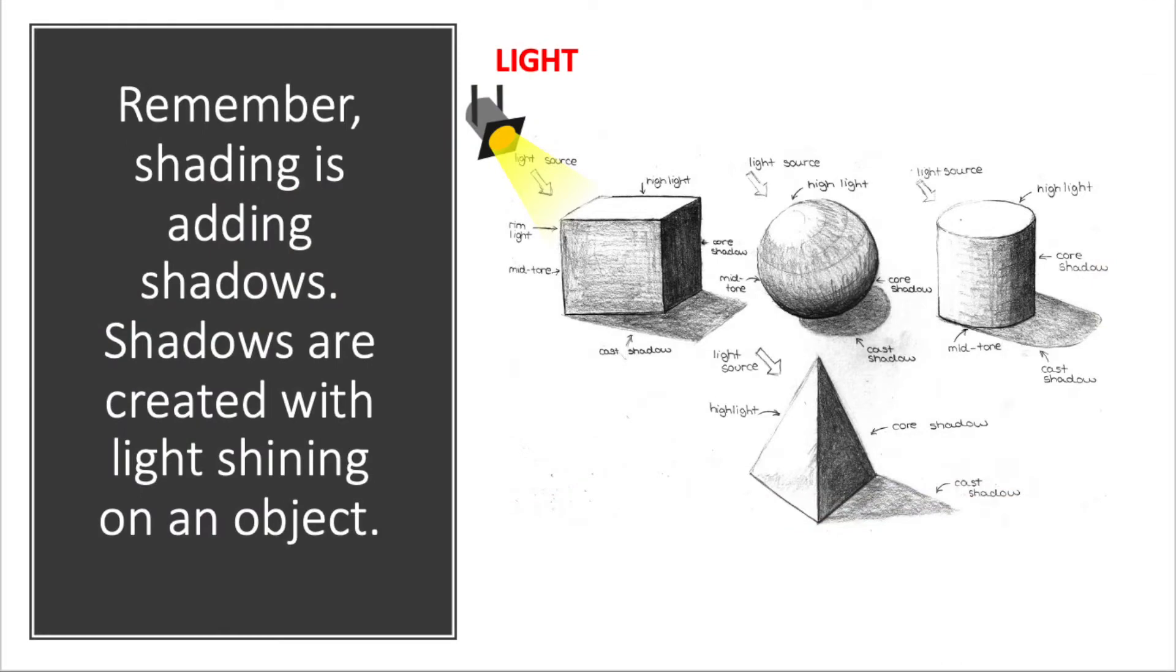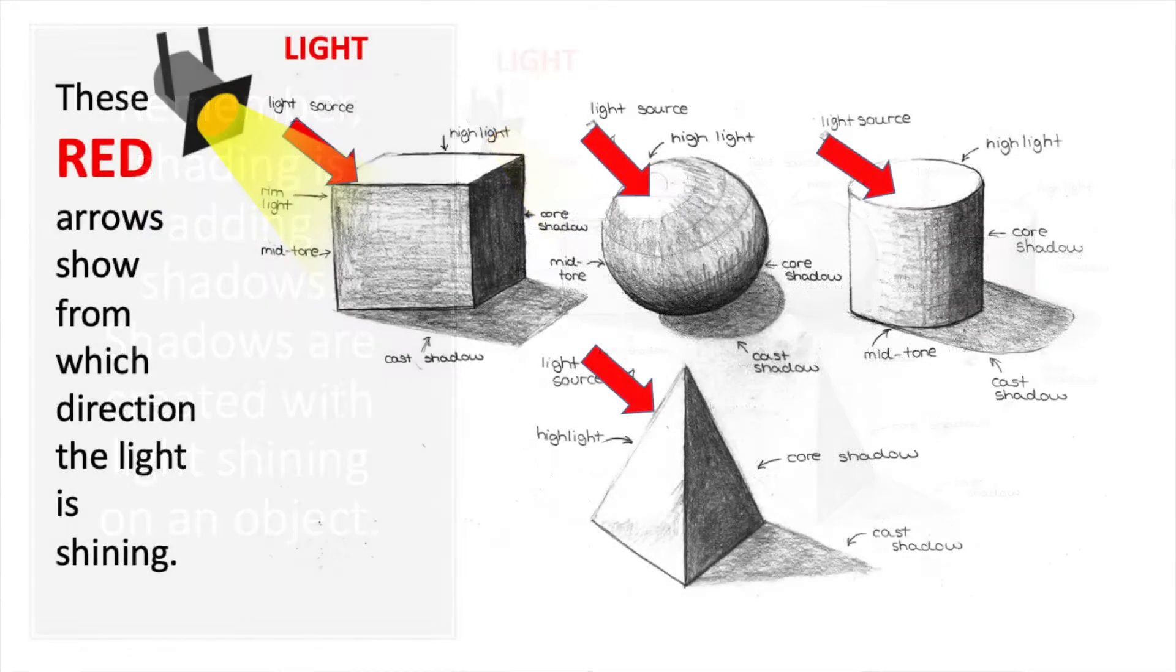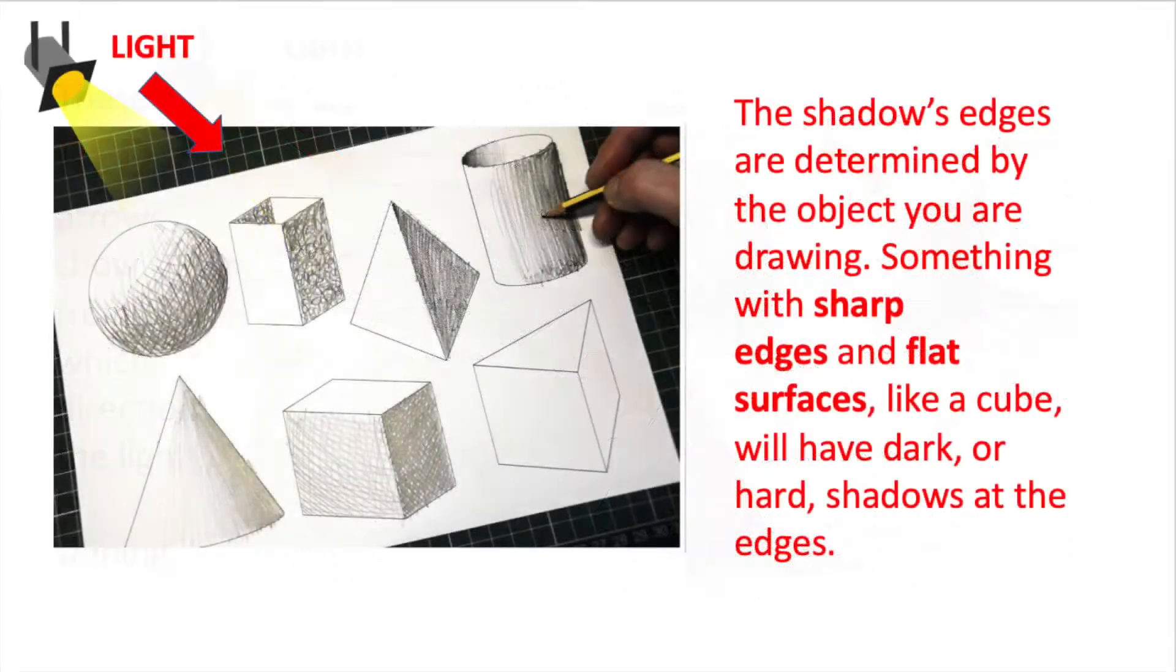Remember, shading is adding shadows. Shadows are created with light shining on an object. These red arrows show from which direction the light is shining. The shadow's edges are determined by the object that you are drawing. Something with sharp edges and flat surfaces, like a cube, will have dark or hard shadows at the edge.